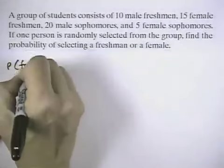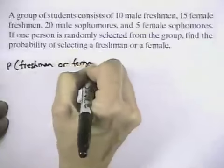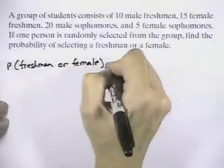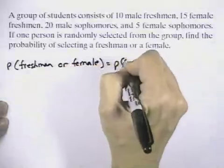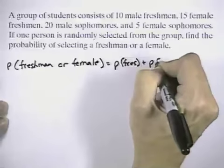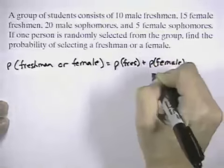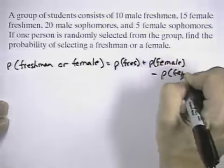So probability of freshman or female. Well, since some of the females are freshmen, there's some overlap. So that would be the probability of a freshman plus the probability of a female, minus the probability of a female freshman.